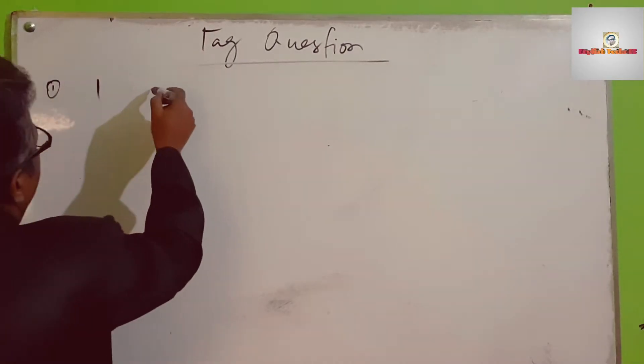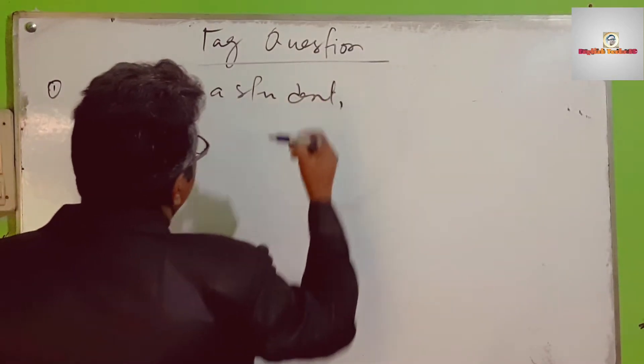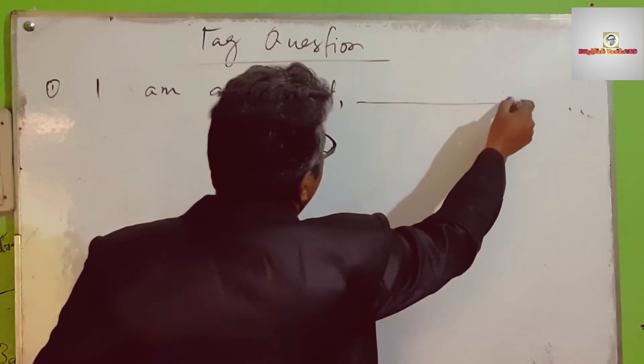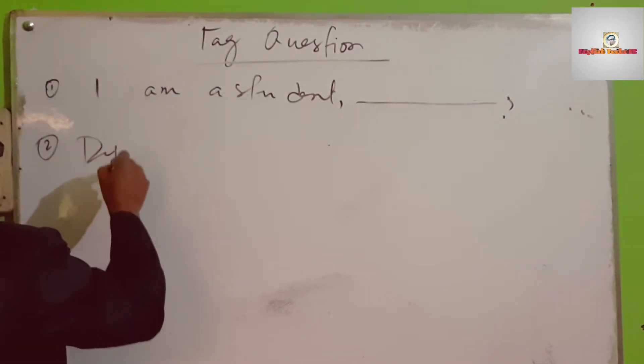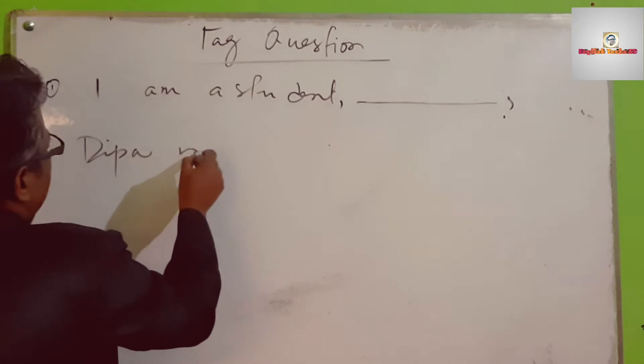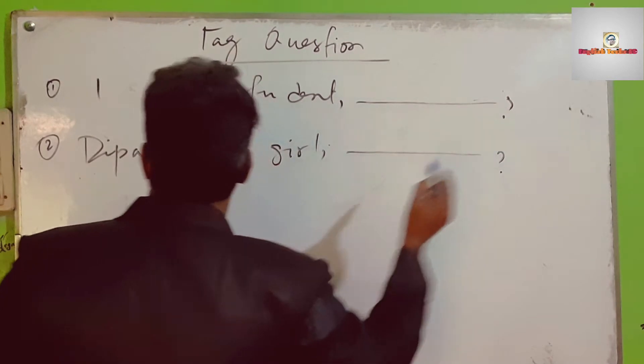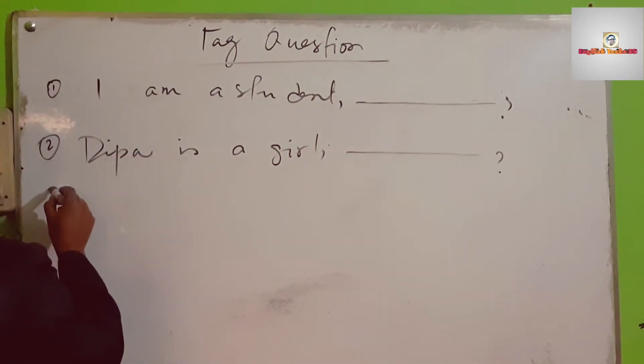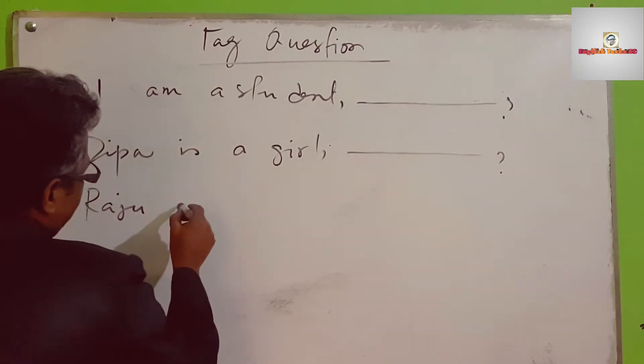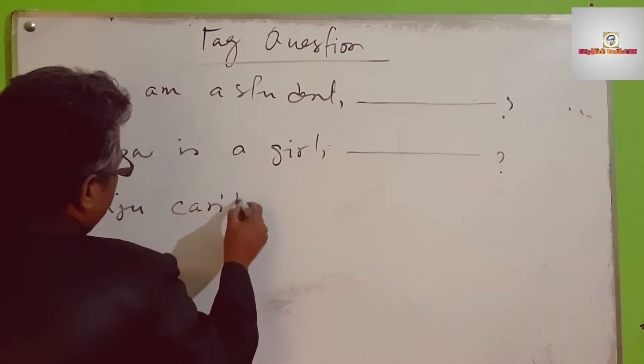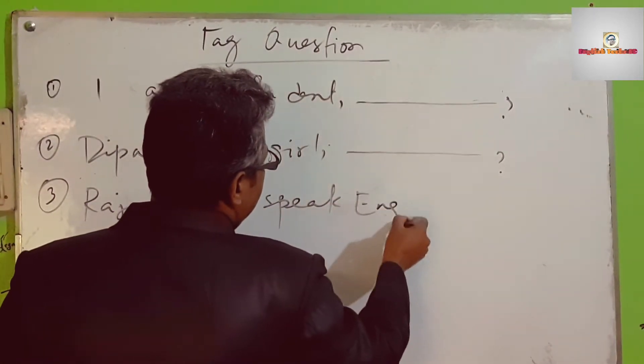I am a student. Number two: Deepa is a girl. Raju can't speak English.